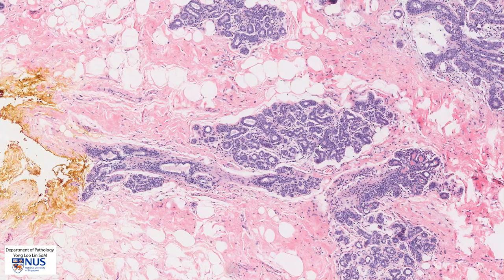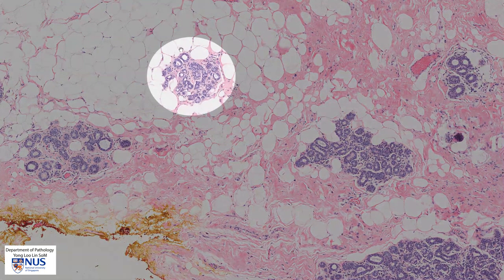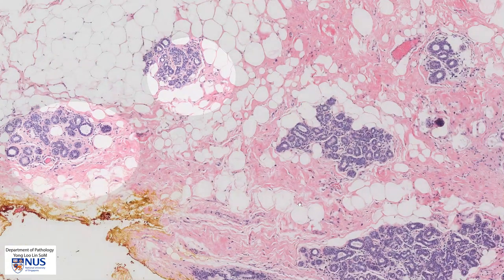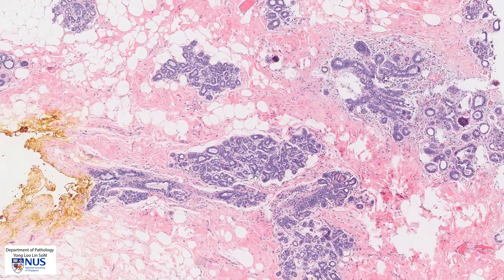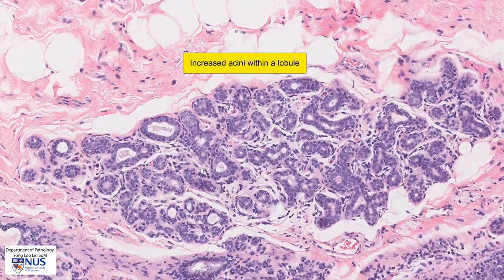Let's take a look at each individual component, starting with adenosis since we are already in this field. If we look at a regular lobule, you will see a certain number of acinar structures or profiles. In this area, it seems to have a little bit more of these acinar structures. This is a benign finding with no significant architectural atypia or nuclear atypia.